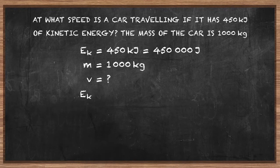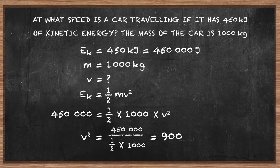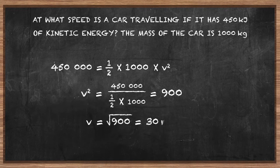Using EK = ½mv², substitute the values and solve for v squared. Then take the square root of v squared to calculate the speed of the car as 30 meters per second.